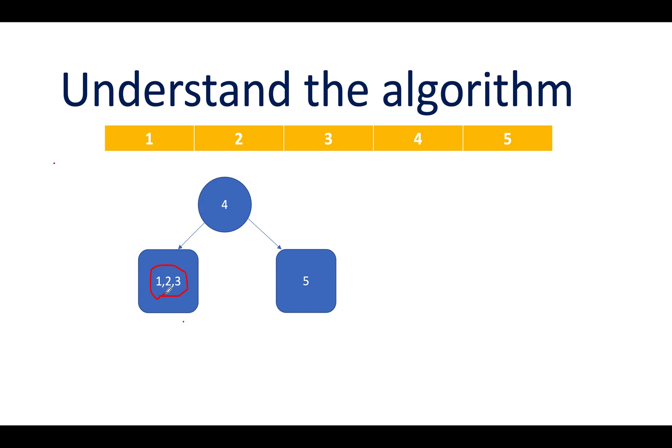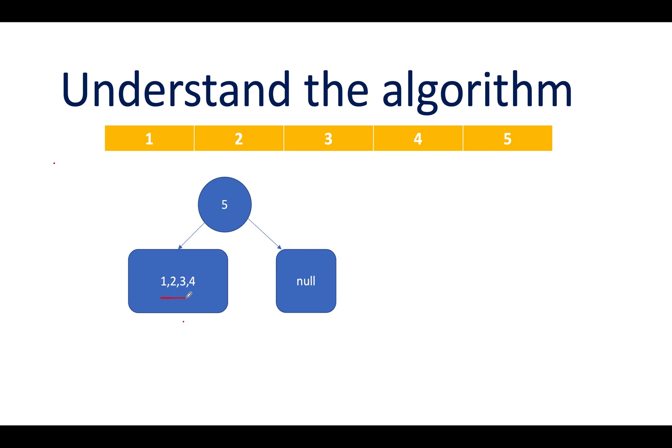In the next case with root as 4, we have 1, 2, and 3 in the left part and 5 in the right. We attach 4's left child to all trees containing 1, 2, 3, and 4's right child is connected to 5. The last case is root as 5, which has 1, 2, 3, and 4 in the left part and null on the right — the reversal of the earlier cases. The question looks a bit tricky but it's not.